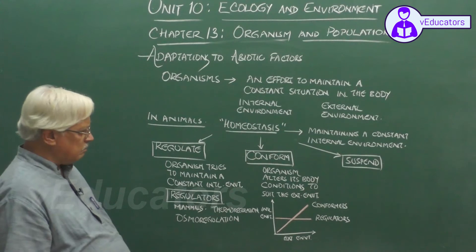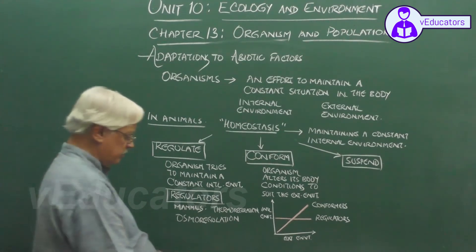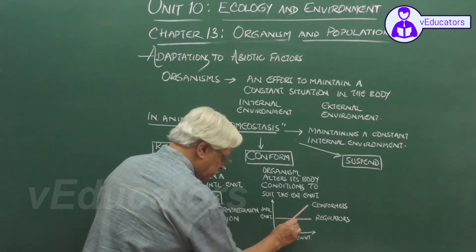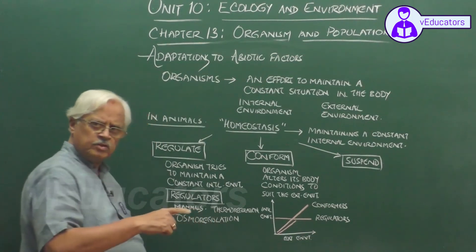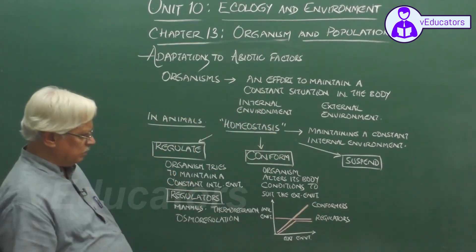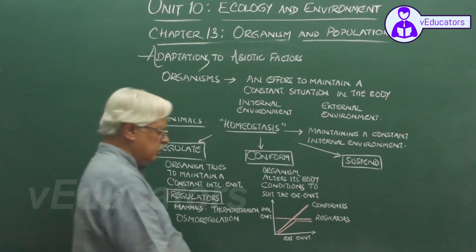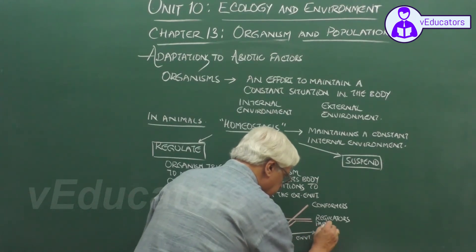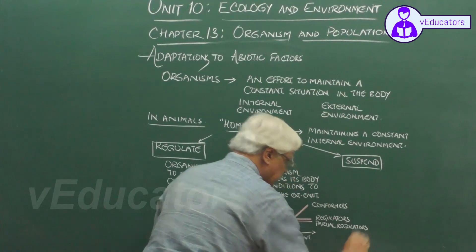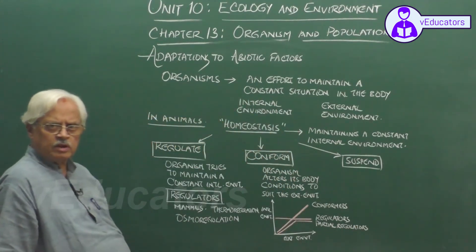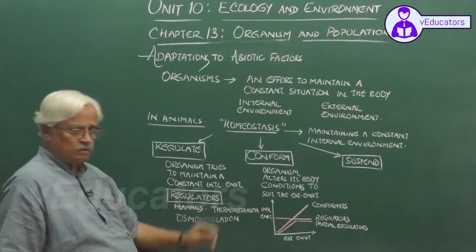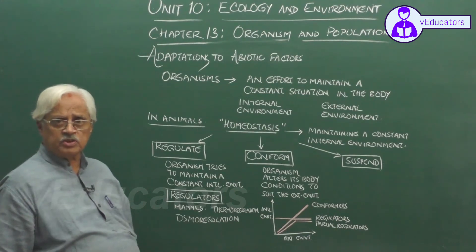In some animals, we have another situation: they start varying their internal environment up to a particular point in the external environment, beyond which they are able to maintain a state of equilibrium. These are called partial regulators. So we have regulators, conformers, and in some cases, partial regulators.